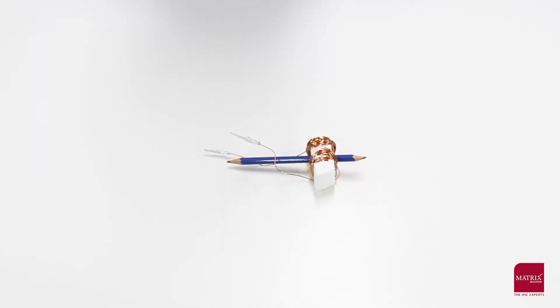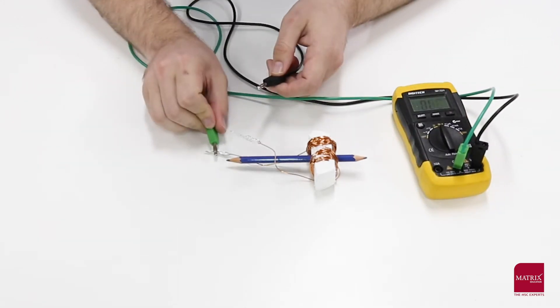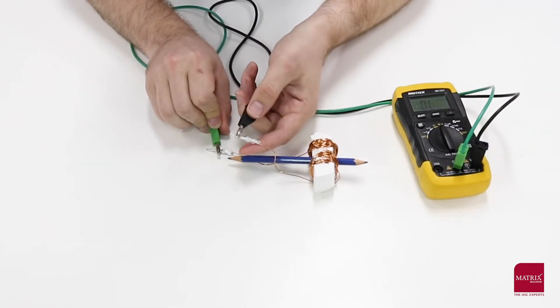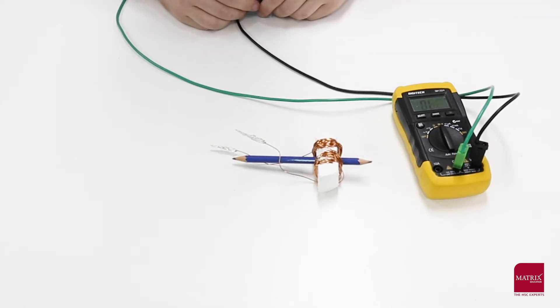Before we build our commutator we're going to just double check the electrical connections we've made using a multimeter. The connections are good and we can proceed with making our commutator.